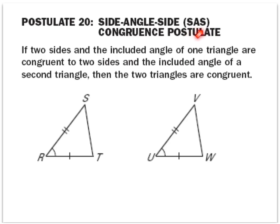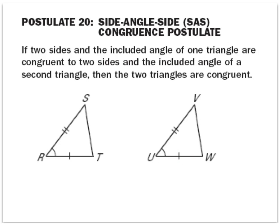I'm not going to write these out every time — I don't expect you to either. So get familiar with the different abbreviations. This one just says that if you have two sides of a triangle with an angle between — we call this the included angle — so in other words, we have a side, an angle, and a side congruent to a side, an angle, and a side in the same order, then you can say that these two triangles are congruent.